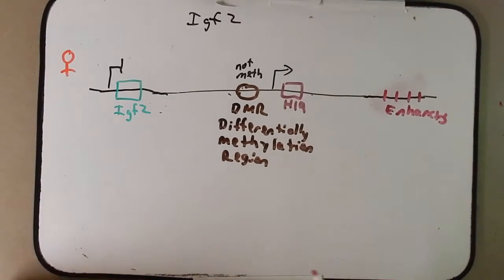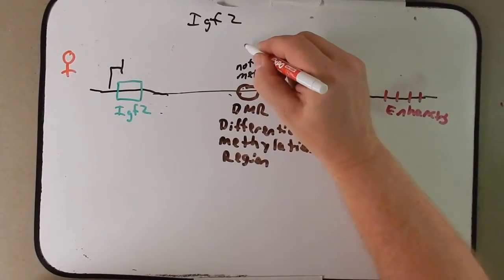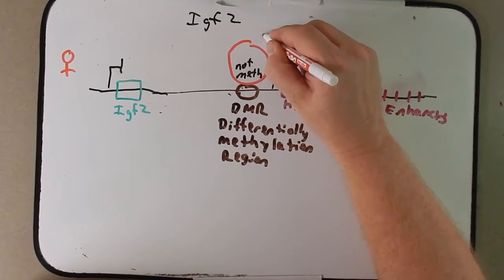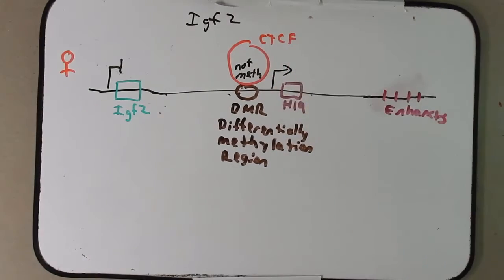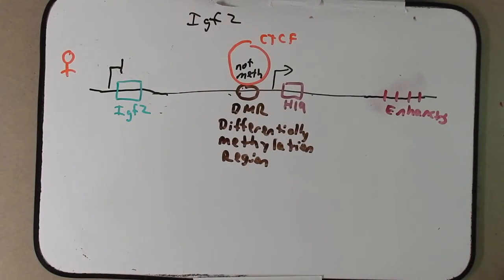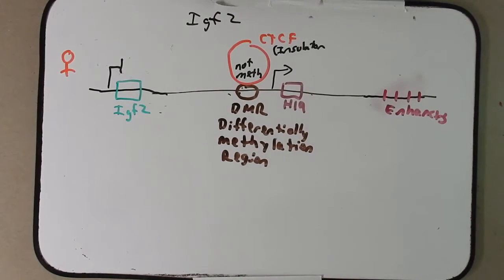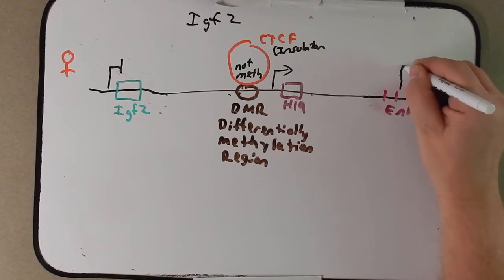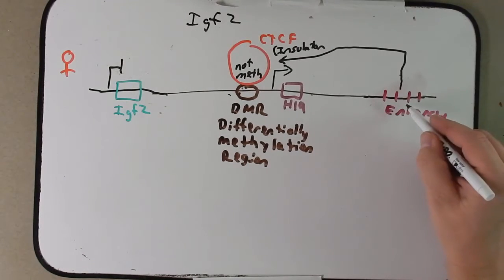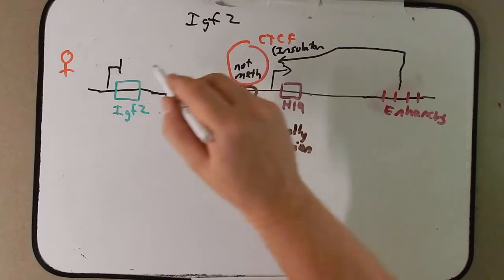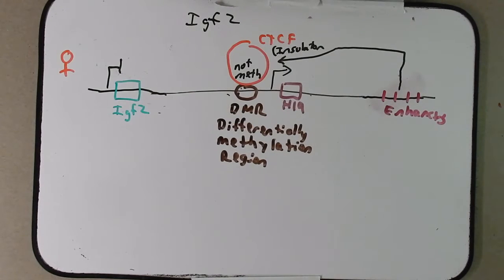Now a protein will bind here to this non-methylated DMR region, and this protein is called CTCF, and what it does we call it an insulator. It's an example of something known as an insulator, and what it does is it allows the effect of these enhancers to only enhance H19 expression.